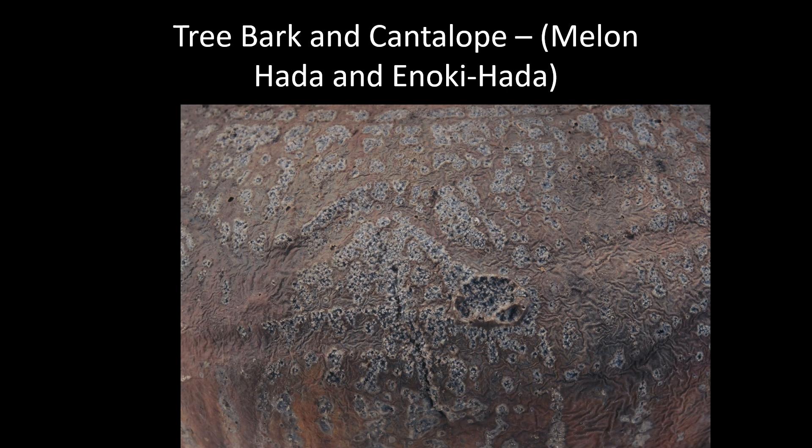And then there's tree bark and cantaloupe — melon hada and enoki hada. This is the enoki hada, the tree bark. This occurs after you've melted the pieces and then they've been allowed to cool a little bit during the firing. Then you heat them up again, and just before they start to melt again, they get this rumpled textured effect — the enoki hada, the tree bark.